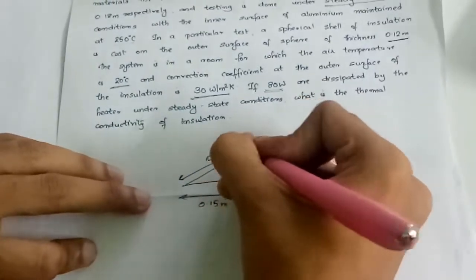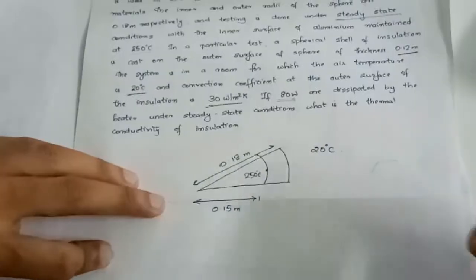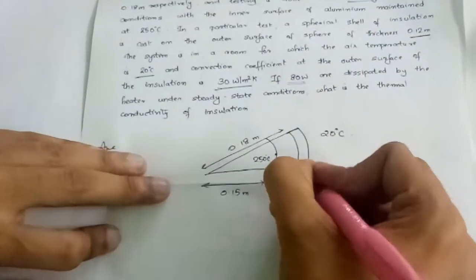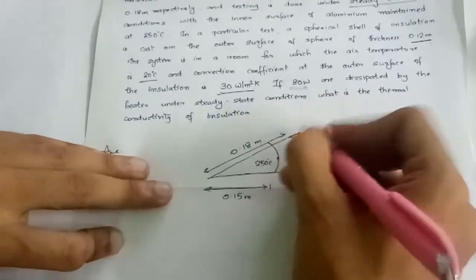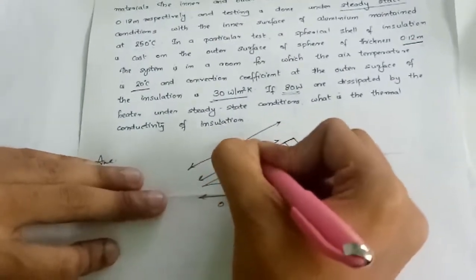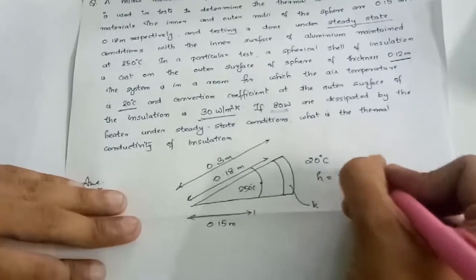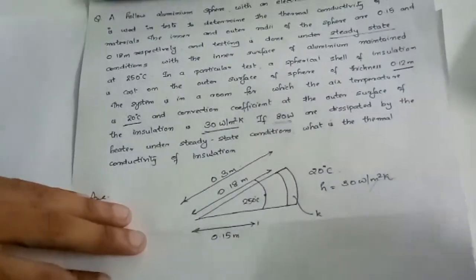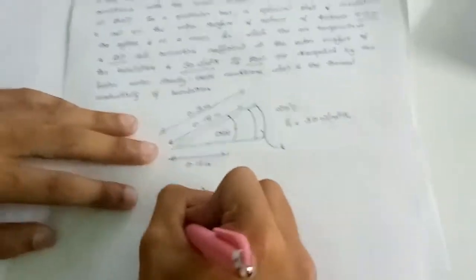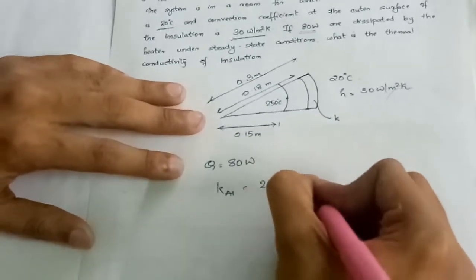Inner radius is 0.15 m, outer radius is 0.18 m, inner temperature is 250°C. Outer temperature is not the surface temperature — the ambient temperature is 20°C. Insulation is also provided with thermal conductivity to be found and thickness of 0.12 m, giving an outer insulation radius of 0.18 + 0.12 = 0.30 m. Convection coefficient is 30 W/m²K. Total heat dissipated Q is 80 W.